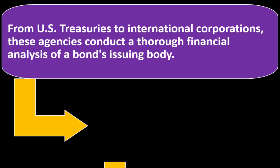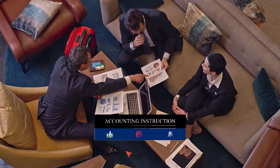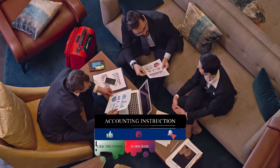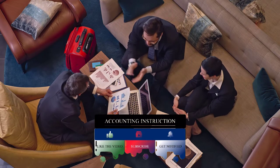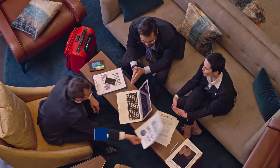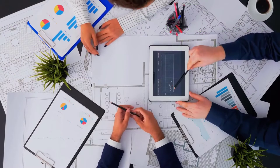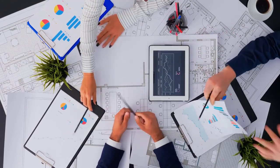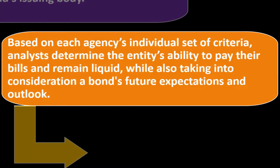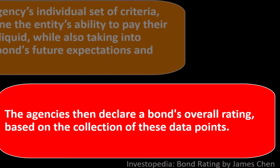From US Treasuries to international corporations, these agencies conduct a thorough financial analysis of a bond's issuing body — governments or corporations. Note that like anything, these rating agencies are fallible. There have been times, particularly in the Great Recession, when they didn't quite have a handle on bond ratings. But they're clearly a good tool for measuring credit worthiness. Based on each agency's individual criteria, they analyze the entity's ability to pay their bills and remain liquid while also taking into account the bond's future expectations and outlook.